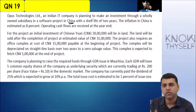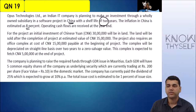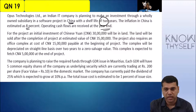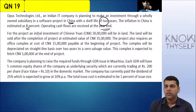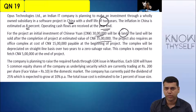In simple terms, you want to make some investment in China with a shelf life of two years. The inflation in China is 8% and the operating cash flows are received at the end of the year. Opus is an Indian company which wants to invest in China, and we are going to get cash flows at the end for two years.